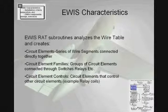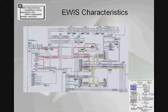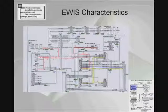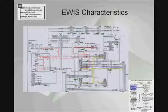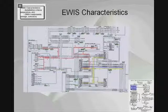Lastly, circuit elements can control other circuit elements, such as relay coils. In this wire schematic, we see a wire coming from a circuit breaker, highlighted in red. All of the wire segments which are directly connected to this wire segment are also highlighted in red — if one wire segment is energized, all of the wires highlighted in red are energized. This circuit element reaches a relay and is connected to two other circuit elements through this relay.